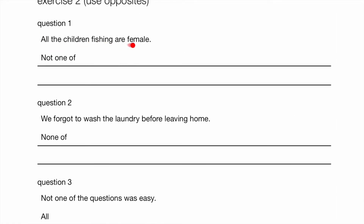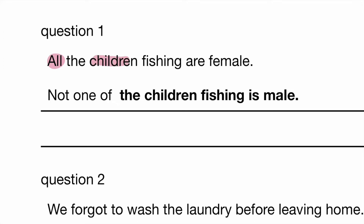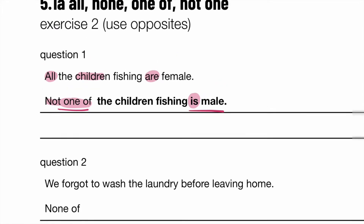Now Exercise 2, where we will use opposites. First question: All the children fishing are female. Children fishing — all of them are female in present tense, so basically all girls are fishing, no boys. So: not one of the children fishing is male. Do you see the difference? 'All,' when dealing with countable nouns, is plural — whereas 'not one of' is singular, so you use the singular form 'is.' When we say all are female, that is equivalent to saying not one of them is male. This is what I mean by using opposites.